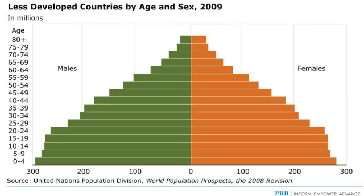What can you tell about these countries' future just by looking at the pyramid? If you said that this group of countries is going to grow in size, you're right. Because as we look at the base of the pyramid, we see how wide it is. Every five years, a larger and larger group moves up the ladder and eventually into the childbearing years. So we can see this group of countries is going to grow, and probably grow pretty rapidly.